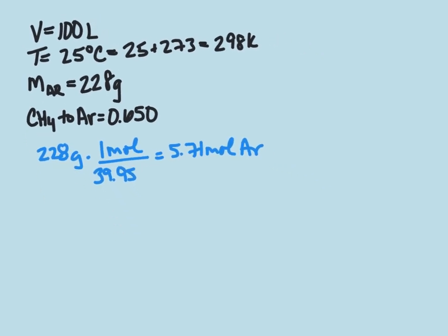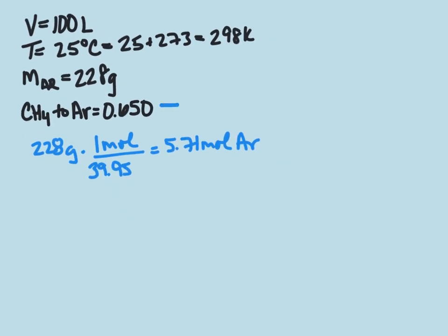We can now, using our mole ratio here, we can go ahead and figure out how many moles of methane we have, how many moles of CH4. So 0.65 is going to be equal to the mole of CH4 divided by our total number of moles, which is 5.71 plus our mole of CH4.